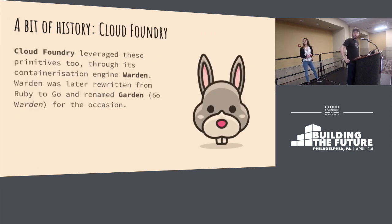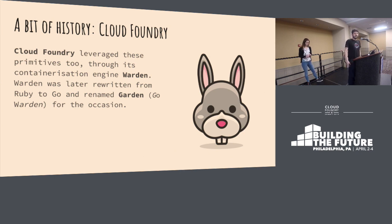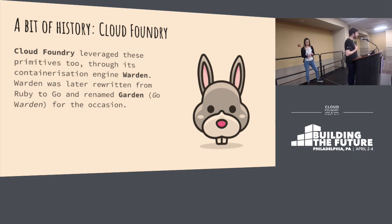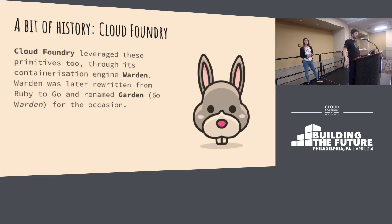In Cloud Foundry, we've been using these primitives for quite a long time. We used to have a container engine called Warden, which was written in Ruby. Then we rewrote it in Go and renamed it to Garden.